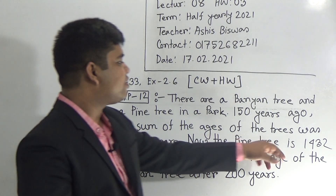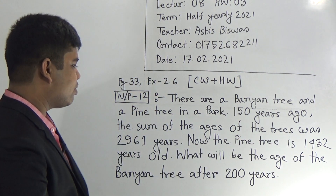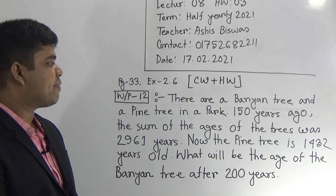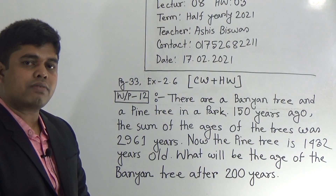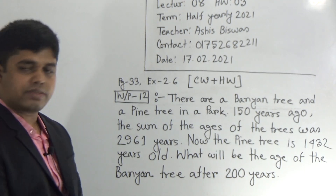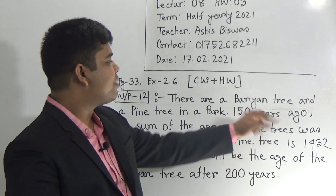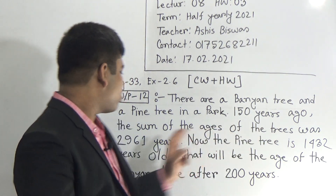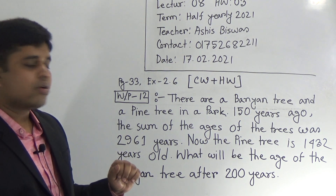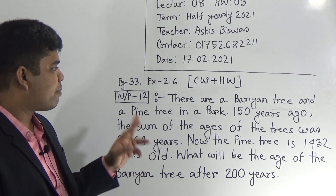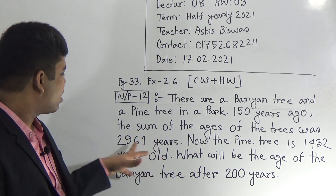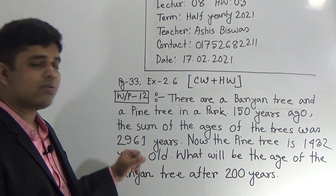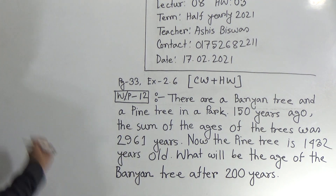Now, the pine tree is 1,432 years old. What will be the age of the banyan tree after 200 years? At first, we need to find out the present age of the banyan tree and pine tree. How? Given that 150 years ago the sum of the ages of the trees was 2,961. So we find the present age of the banyan tree and pine tree from this information. We add 2,961 with 150 plus 150, because there are two trees.